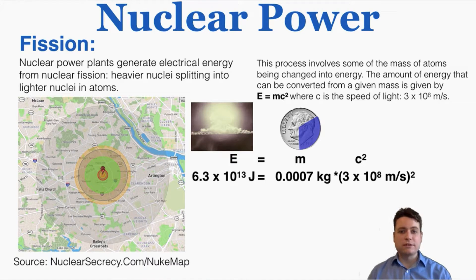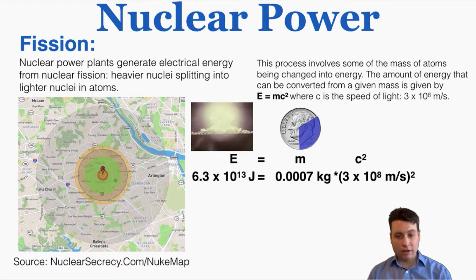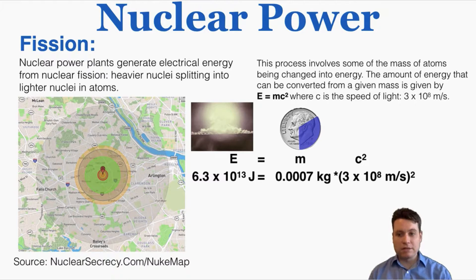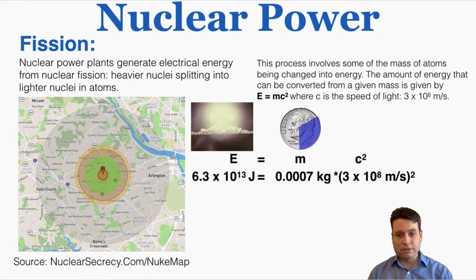In more advanced physics, we don't talk about the conservation of mass and the conservation of energy separately. We talk about the conservation of mass-energy, because these two things are fundamentally the same thing on a basic level. The amount of energy that can be converted from a given mass is given by E equals mc squared — probably the most famous physics equation in the world — where c is equal to the speed of light, three times ten to the eighth meters per second.